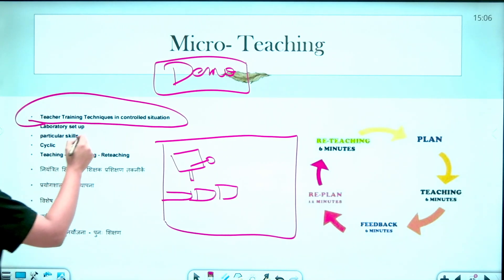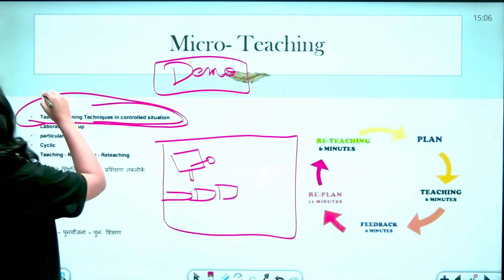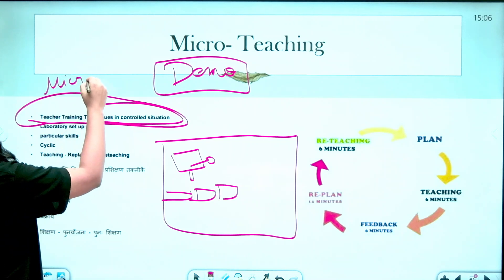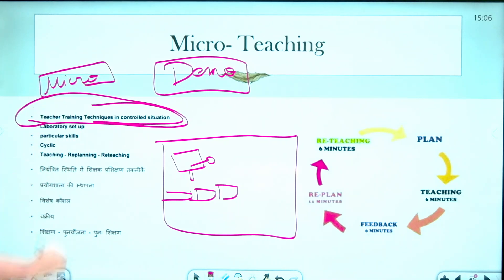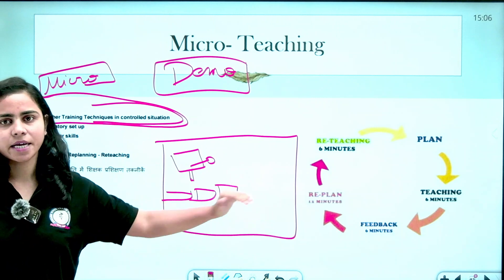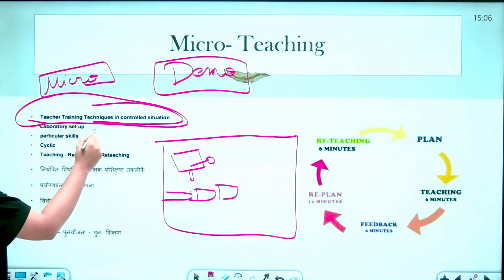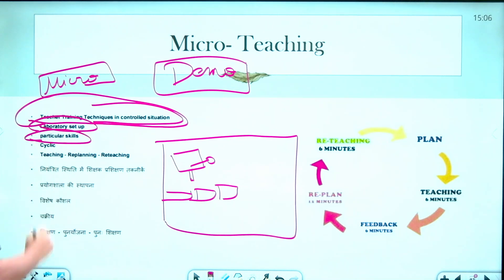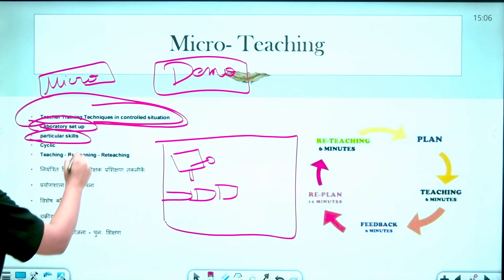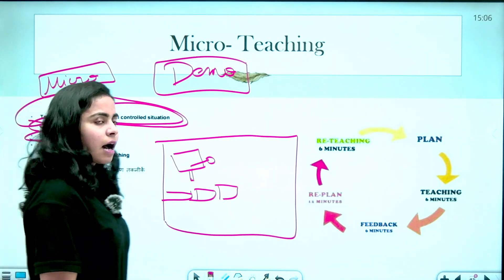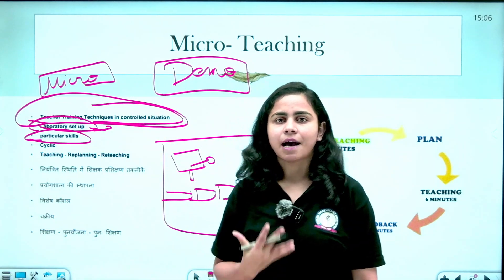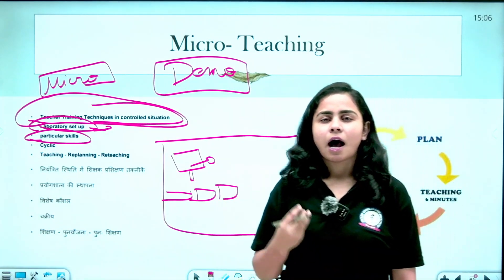Micro-teaching is a technique where teaching is practiced in a controlled situation, like a laboratory setup. You focus on particular skills — your body language, your presentation, your communication, your eye contact — so that you can take care of your students effectively.